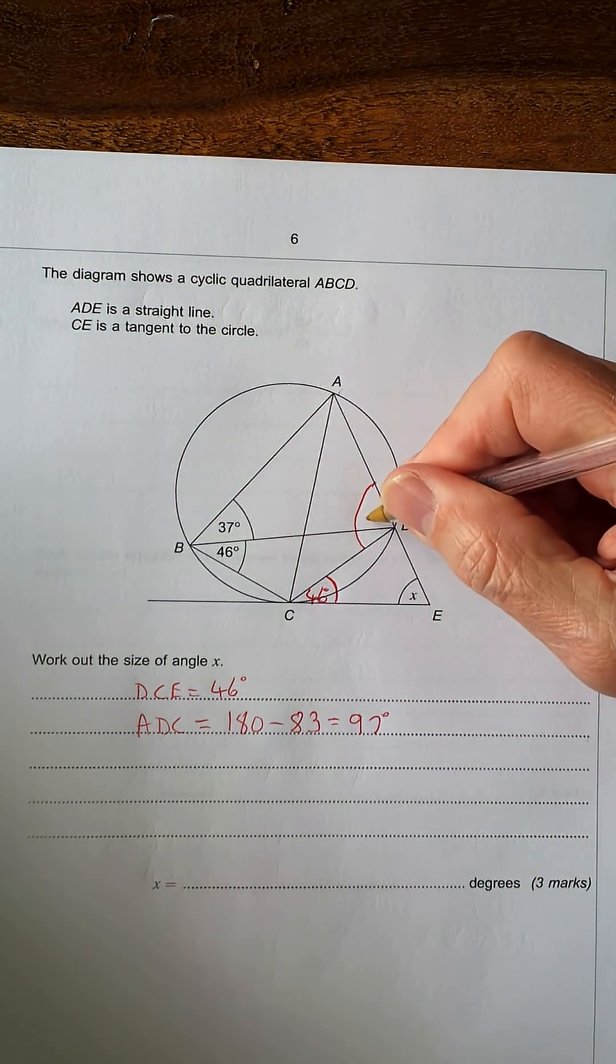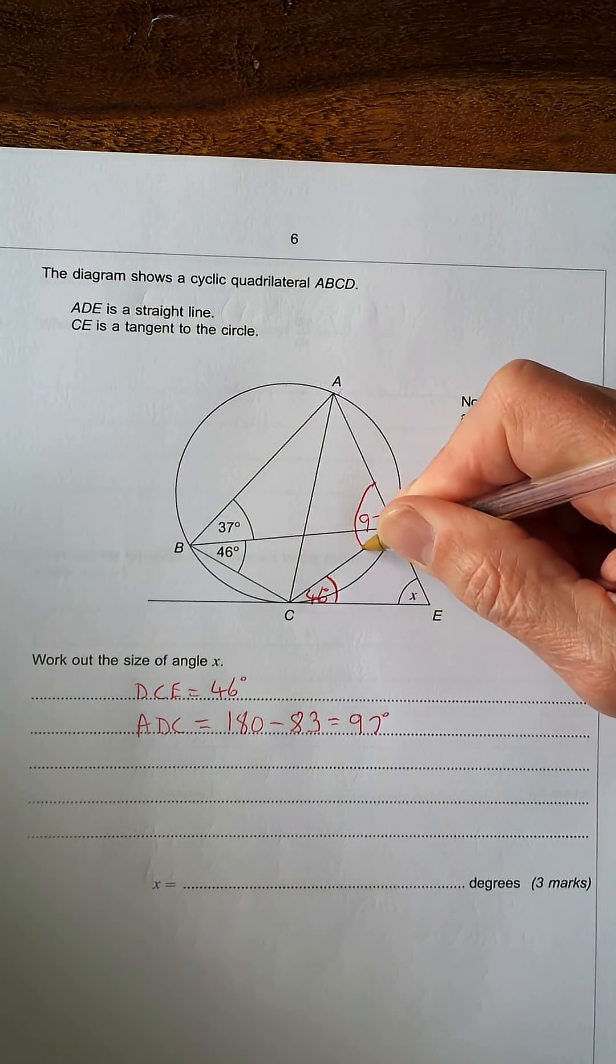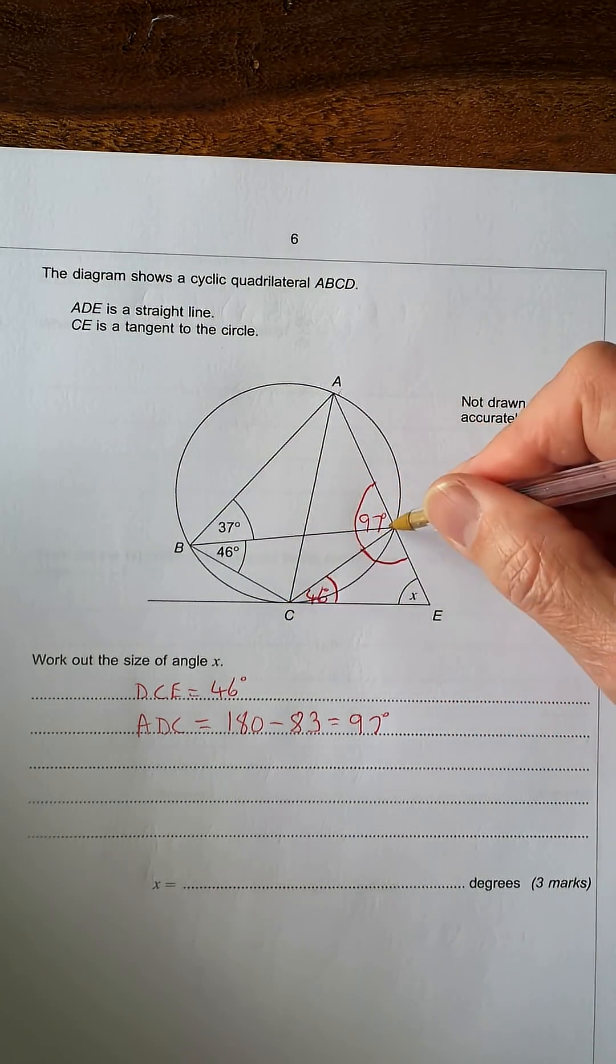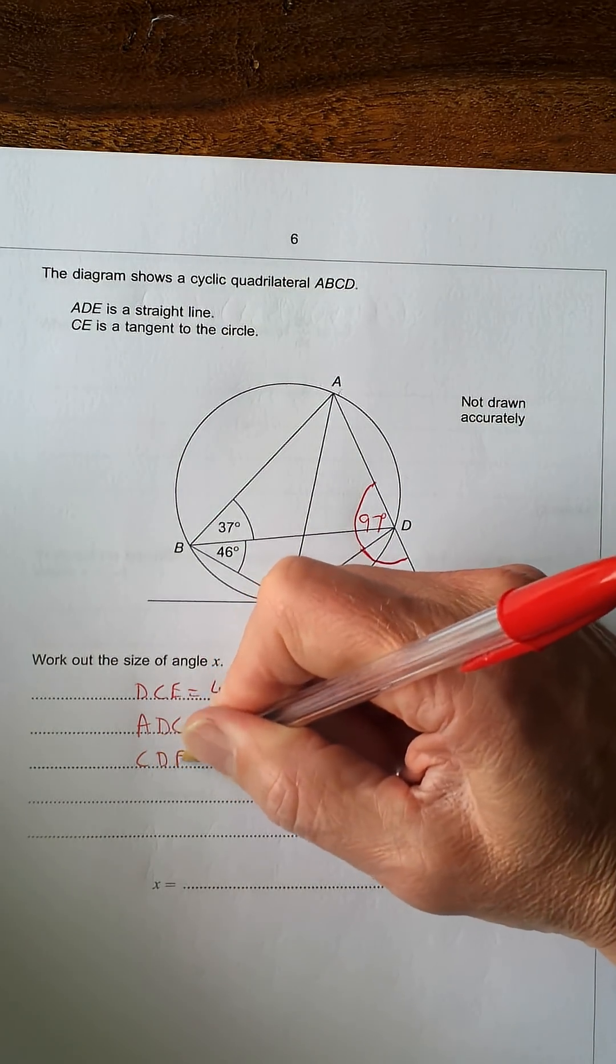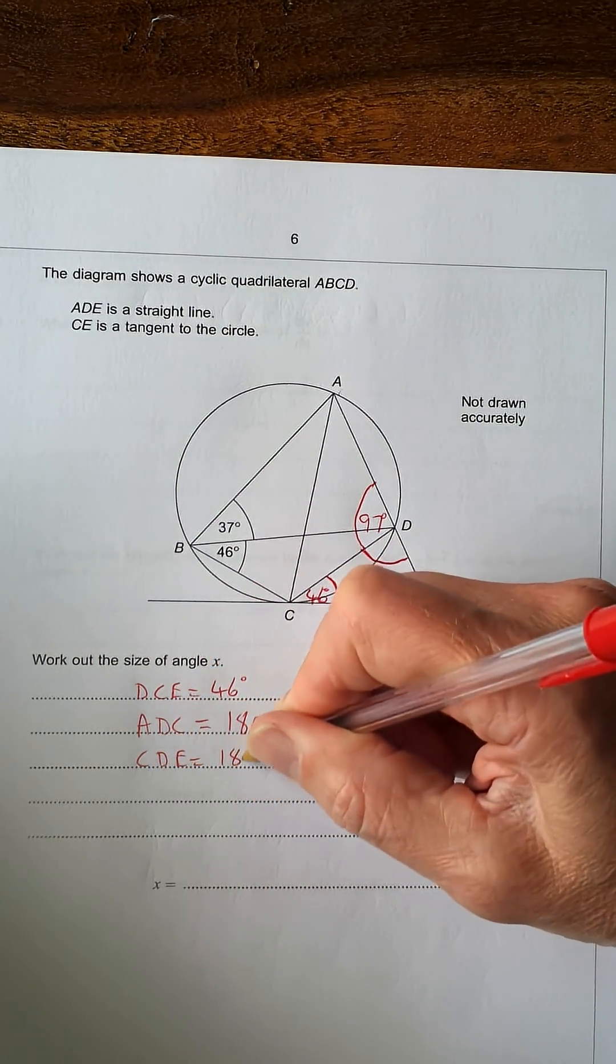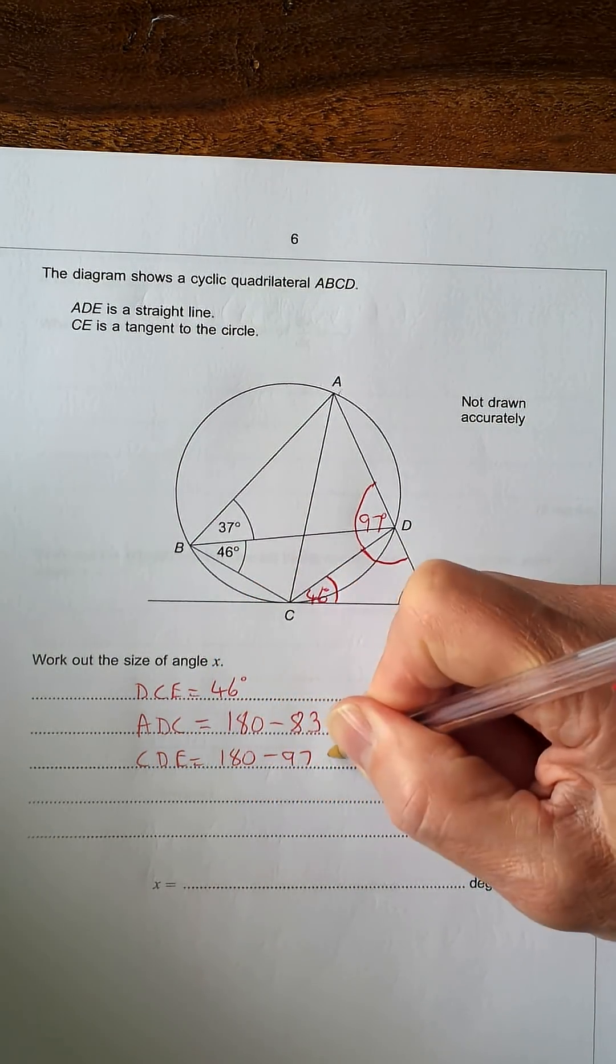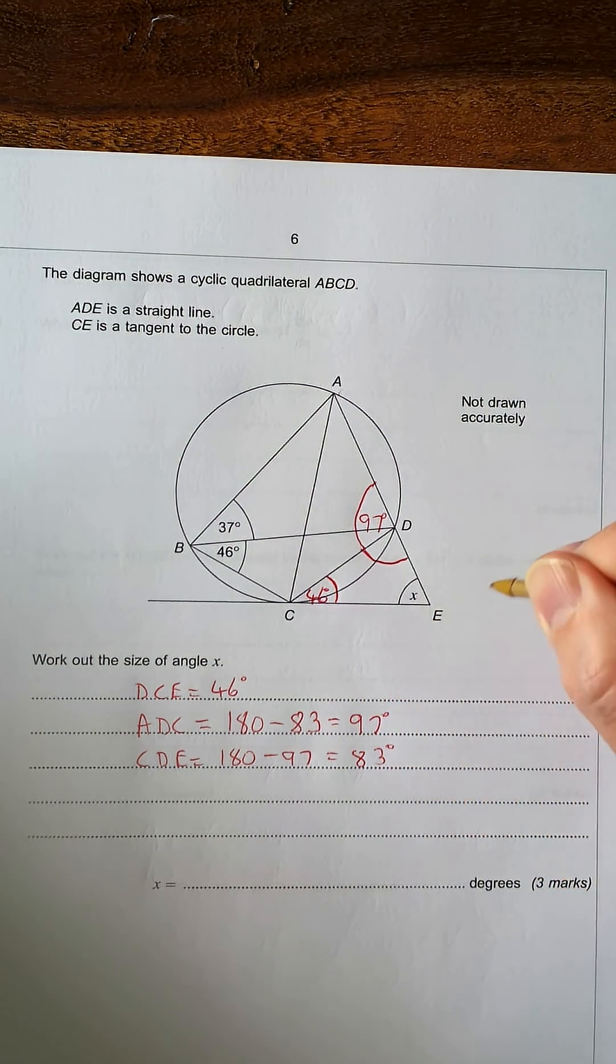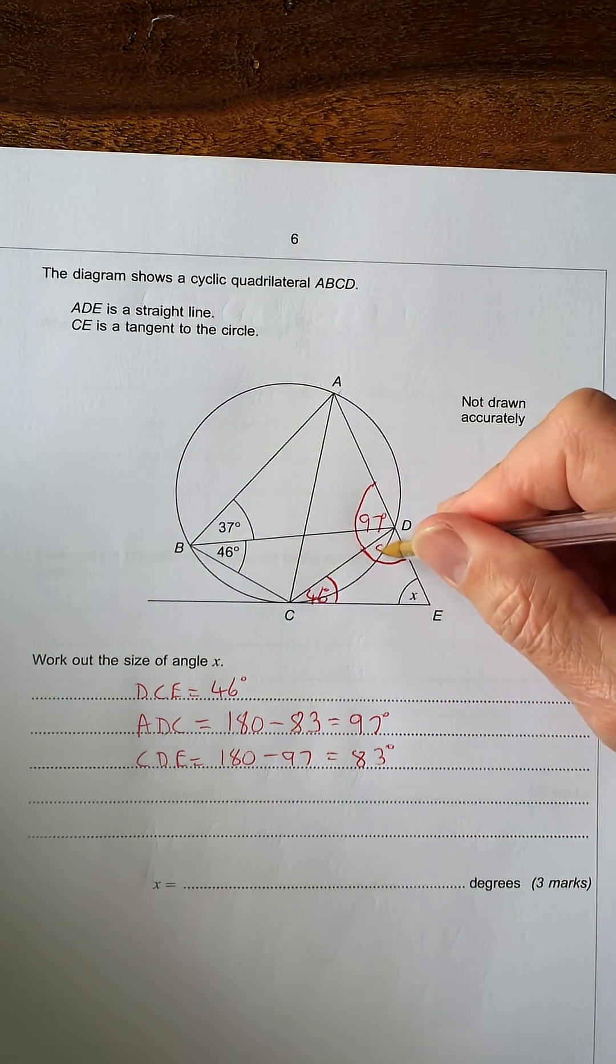Now that's 97. This is just angles on a straight line now. So let's say CDE. CDE equals 180 minus 97. Angles on a straight line, which is 83 degrees. 83 there.